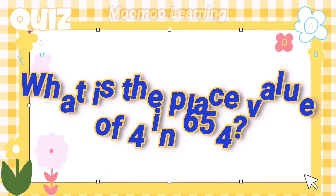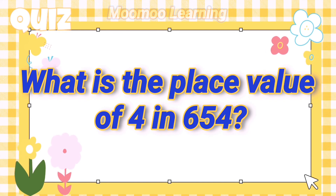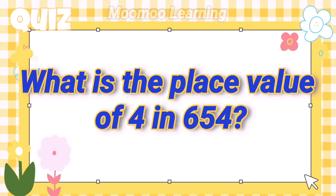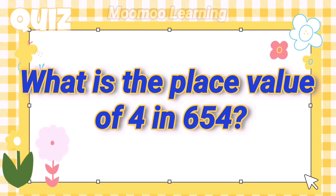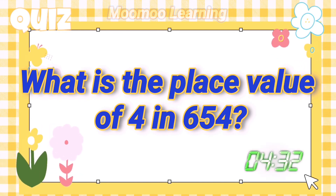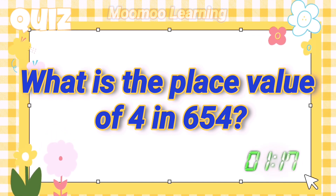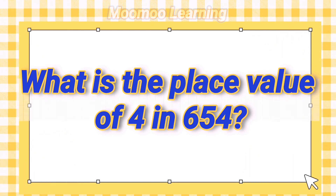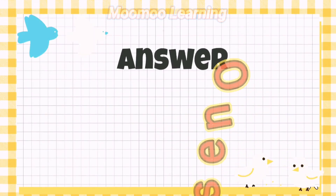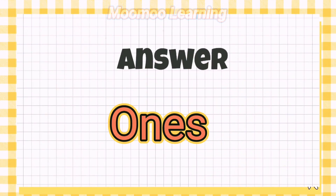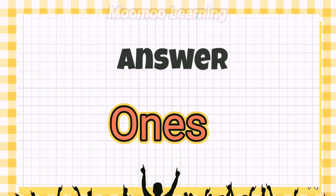What is the place value of 4 in 654? Answer: 1 (ones place).